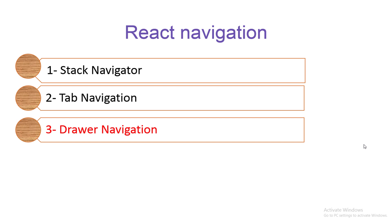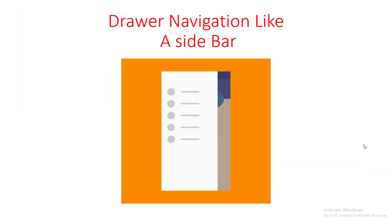Hi everyone and welcome to Web is a Step Tutorials. This is Ahmad Fakhr and this tutorial is about the final type of React Navigation, which is drawer navigation. Drawer navigation is simply like a sidebar navigation on the web. In most cases, when you open an application, you will see a floating menu that comes from the right side or from the left side with some items, like you saw in this picture.